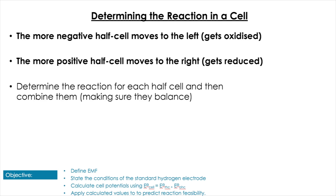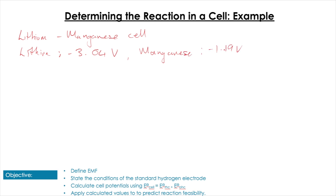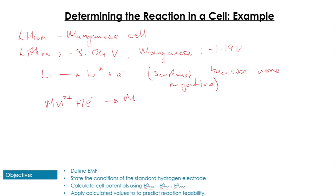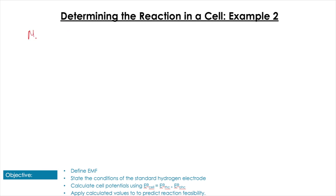Now we need to make sure we can determine the overall reaction in a cell. The more negative half-cell will be oxidized - moving to the left - and the more positive will be reduced. We then combine these to make the overall redox reaction. For the lithium-manganese cell, lithium is most negative, so it is oxidized to Li⁺ plus an electron. Manganese is reduced. Multiply the lithium equation by two, then combine them just like any other redox equation to give the overall cell reaction.